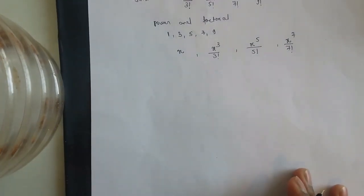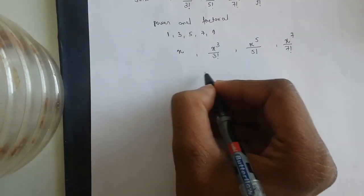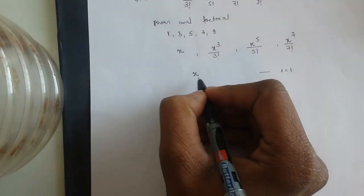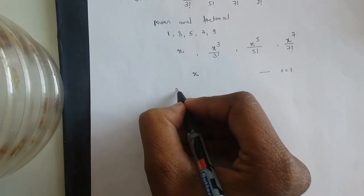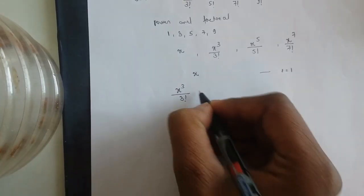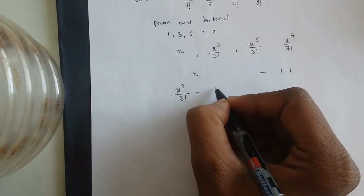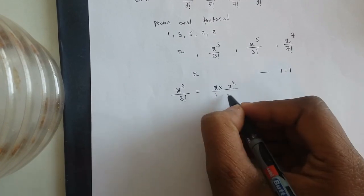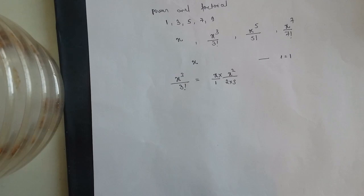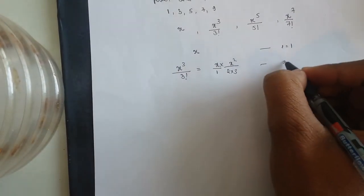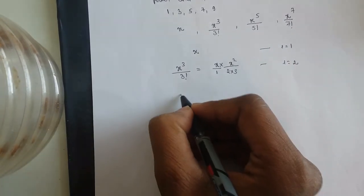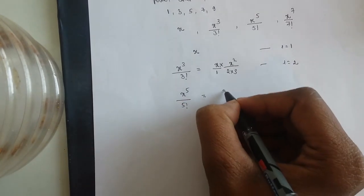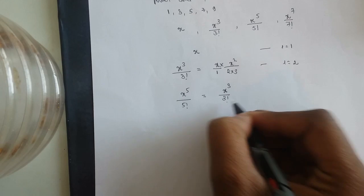Now we can see that the first term is x (i=1). From this, the second term is x³ / 3!, which I can write as x · (x² / (2·3)). For i=2, the third term is x⁵ / 5!, which can be written as x³ / 3! · (x² / (4·5)).